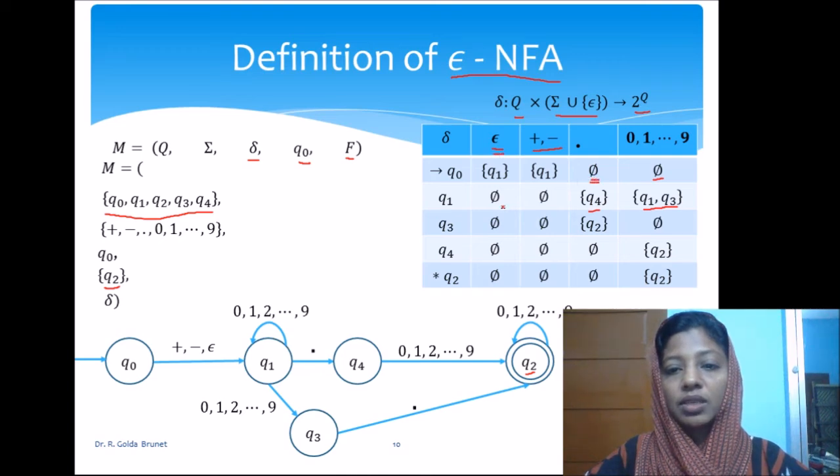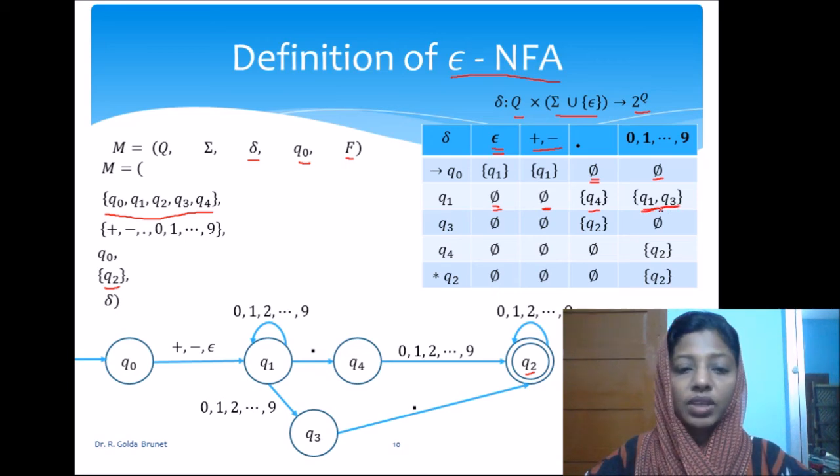The other non-determinism is the null transition. So, we have been defined the transition for all the symbols for all the states. And for a particular state and for a particular symbol, we can move to more than one state. These are the three non-determinism involved in this epsilon NFA.